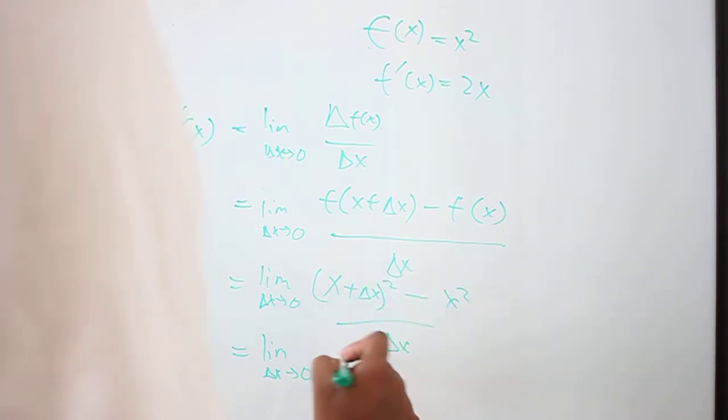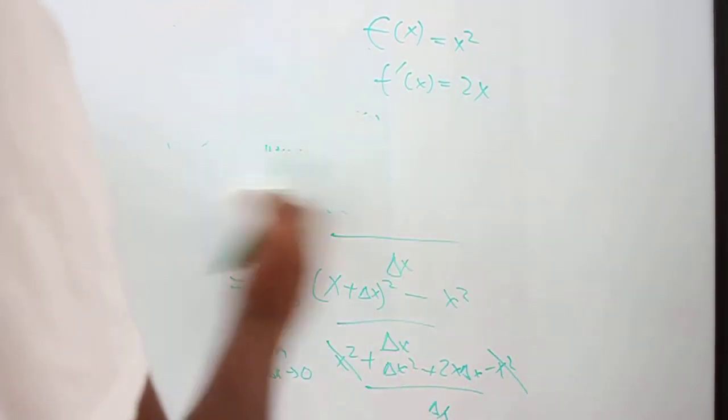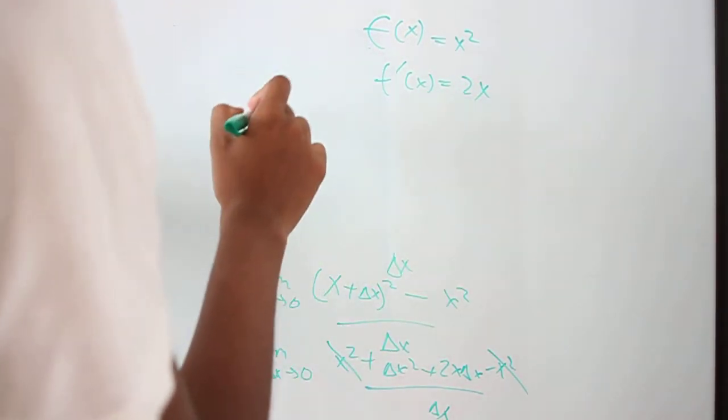And further expanding this, it's actually x squared plus delta x squared plus 2x delta x minus x squared over delta x. And here we can cancel out x squared.